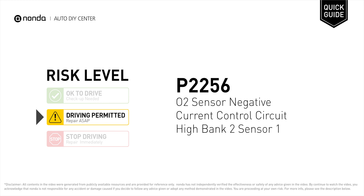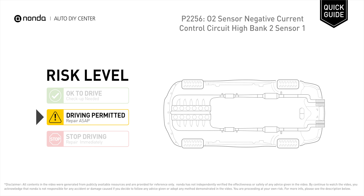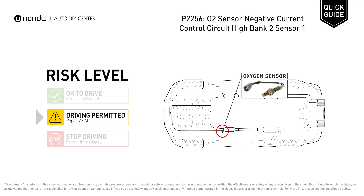P2256 is a diagnostic trouble code for O2 sensor negative current control circuit high, bank 2 sensor 1. Under this circumstance, short distance driving is permitted, but your vehicle should be repaired ASAP. P2256 indicates that the powertrain control module has detected a reference voltage that is not within the range from the bank 2 sensor 1 oxygen sensor.